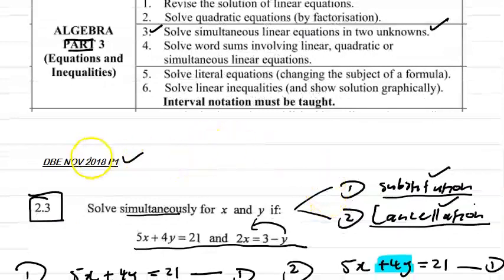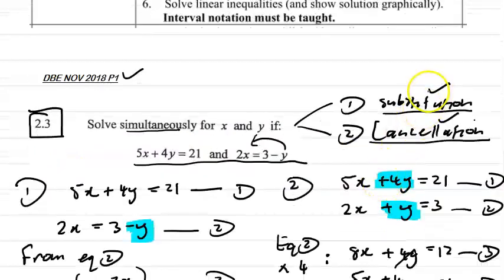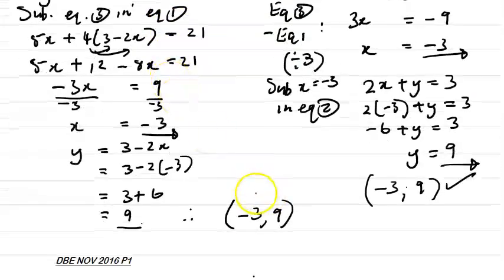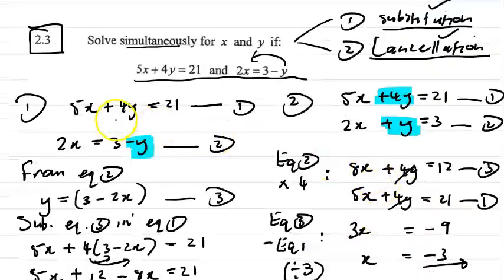In the previous video, I looked at the question from the November 2018 paper 1, and we looked at the method substitution and cancellation. We did both types of methods with the same question, and we got the same answer, which is -3 and 9. We said that with simultaneous equations, remember that we're just finding the points of intersection algebraically.